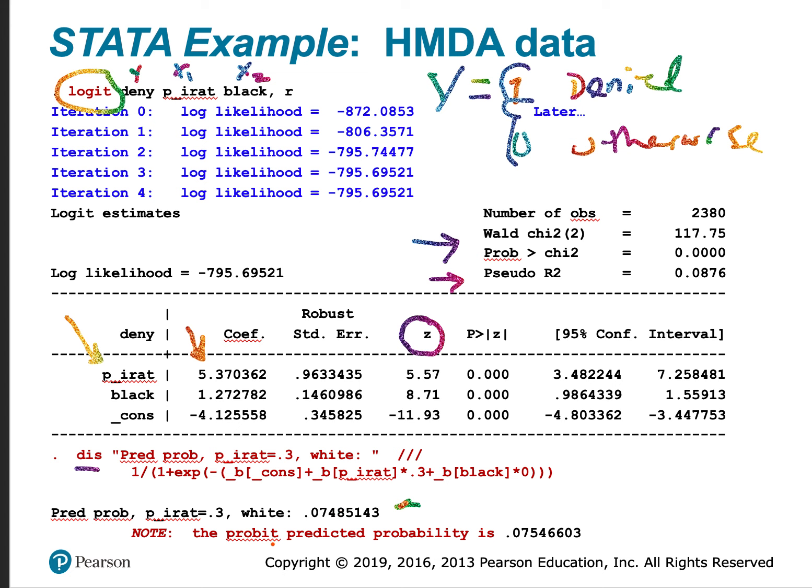And we observe that the probit predicted probability is about 7.5%. So these predictions are quite close.